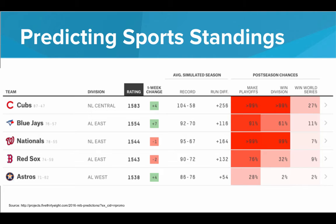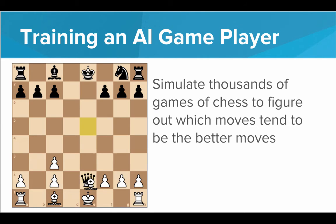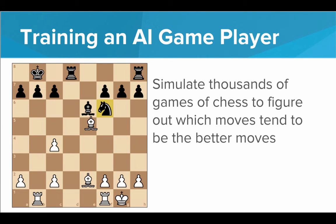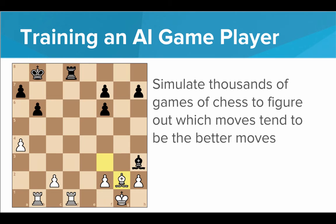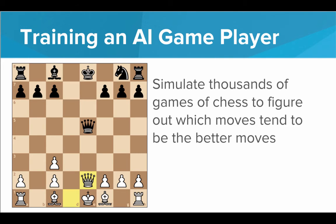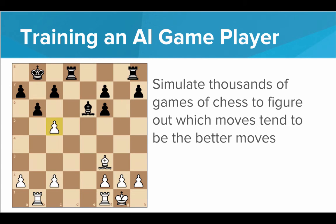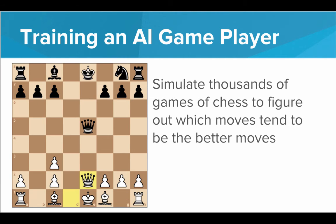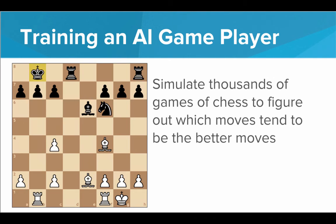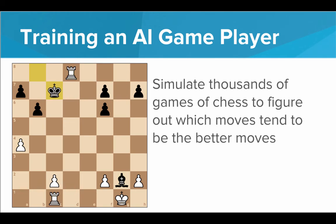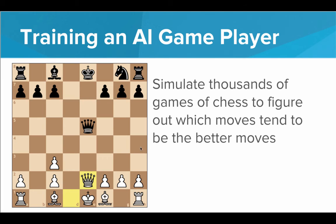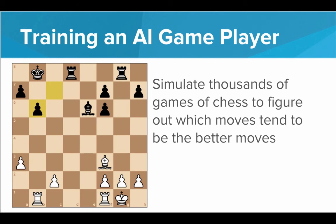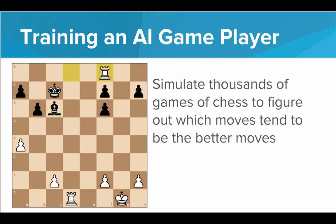What's incredible is we can also use the same technique of just simulating the same thing time and time again to actually train computers to do new things. For example, we can give it a model of how chess works. We can say, this is how this chess game works. These are all the possible moves you can do. These are the rules. And just play yourself thousands of times, thousands of simulations. Over time, patterns start to emerge. You can say, generally this move leads to a win, and this move leads to a loss. After thousands of simulations, the computer gets better at playing chess, which is incredible. This is such an incredible use of simulations.